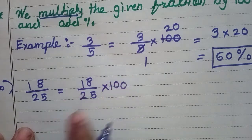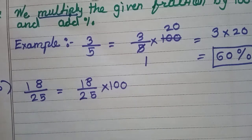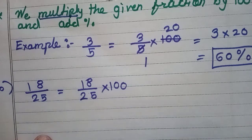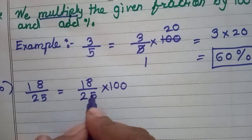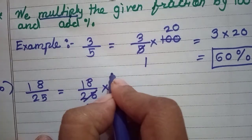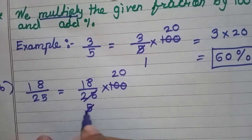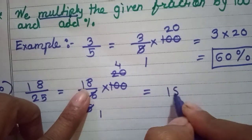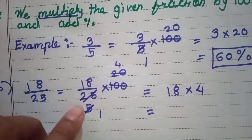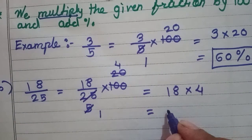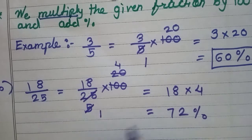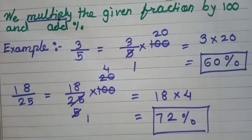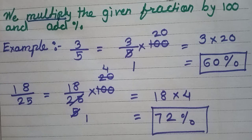Example 2: 18 divided by 25. We multiply by 100. We can divide 25 and 100 by 5, because the last digits are 5 and 0. 25÷5 = 5, 100÷5 = 20. Then 5 goes into 20 giving 4. Remaining: 18 × 4 = 72. Add the percentage sign — the answer is 72 percent.